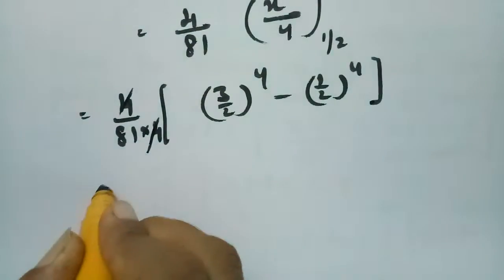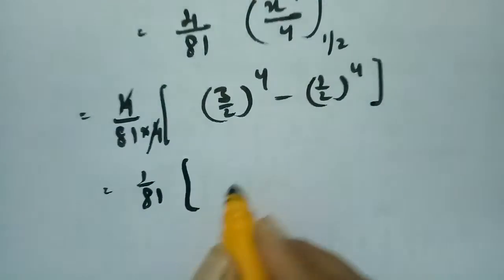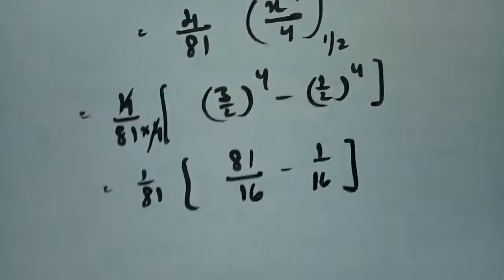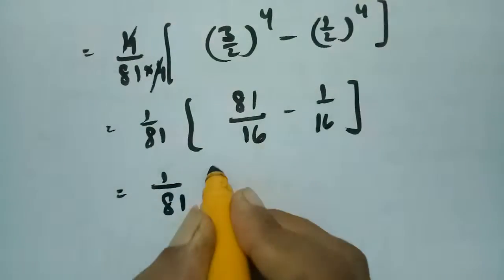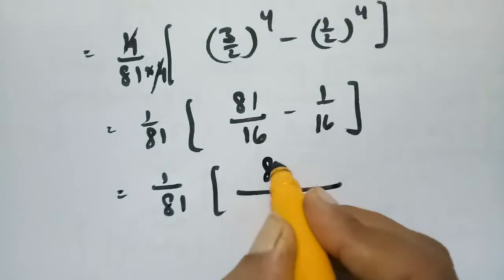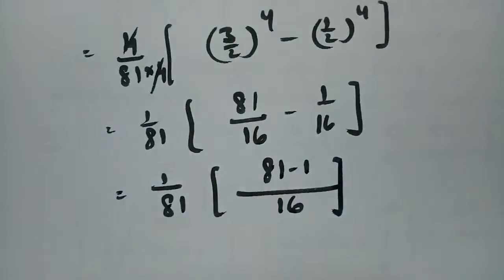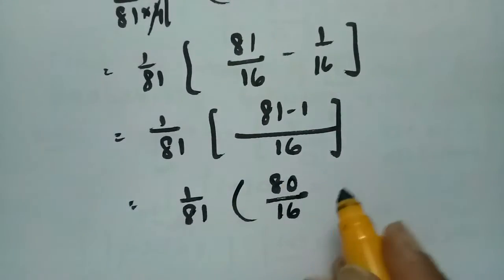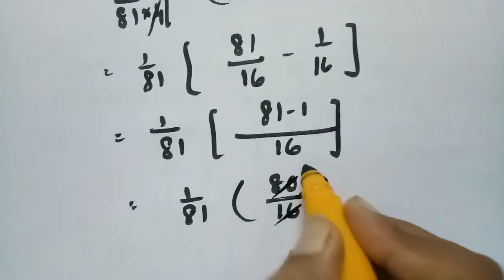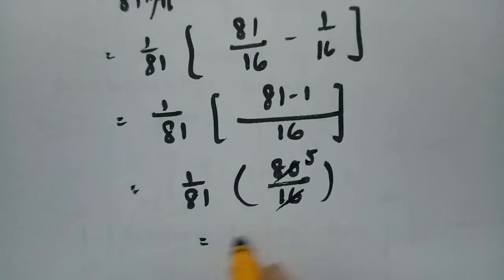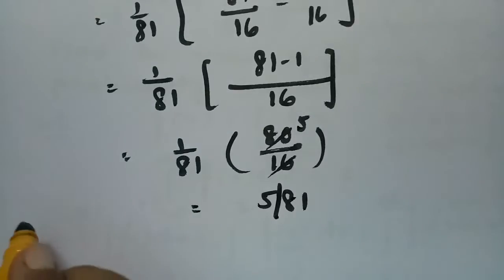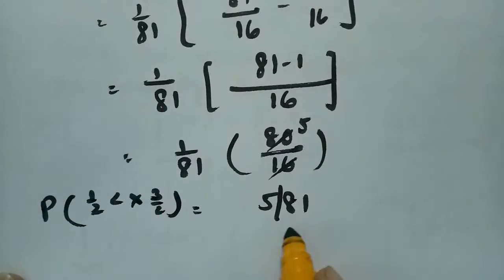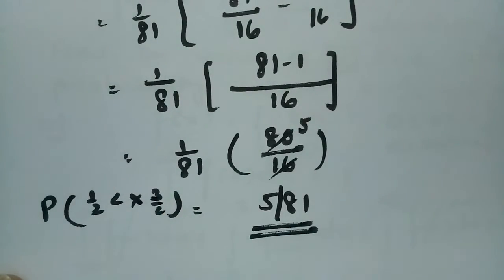Evaluating: (3/2)⁴ = 81/16 and (1/2)⁴ = 1/16. Taking 16 as the common denominator gives (1/81) times (81 − 1)/16 = (1/81) times 80/16 = (1/81) times 5. Therefore the probability that x lies between 1/2 and 3/2 is 5/81.